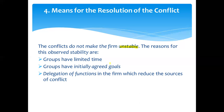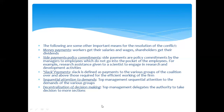Third, there is delegation of function in the firm which reduces the source of conflict. The following are some important means for the resolution of conflict: first, money payments — giving more remuneration to persons; workers get salaries, shareholders get dividends. Second, side payments or policy commitments by managers to employees, such as providing research assistants to scientists. Third, slack payments — payments to various groups over and above those required for efficient working. Fourth, sequential attention to demands of various groups. Fifth, decentralization of decision-making.